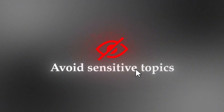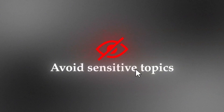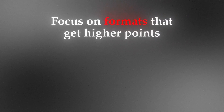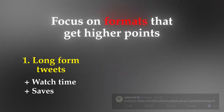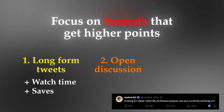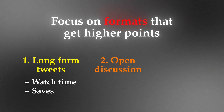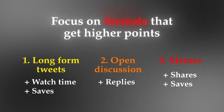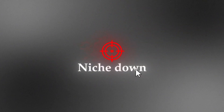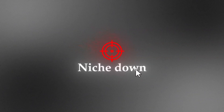The second point is avoiding sensitive topics — don't post about politics or anything controversial. We also need to focus on formats that score higher points. Long-form tweets do really well because they encourage higher watch time and saves. Open discussions work great for farming replies — for example, asking what ML software projects people are currently working on. Memes are good for farming shares and saves. Finally, really try to niche down — don't confuse the algorithm by sending your content to too many different types of people. Build a strong, tight-knit community.